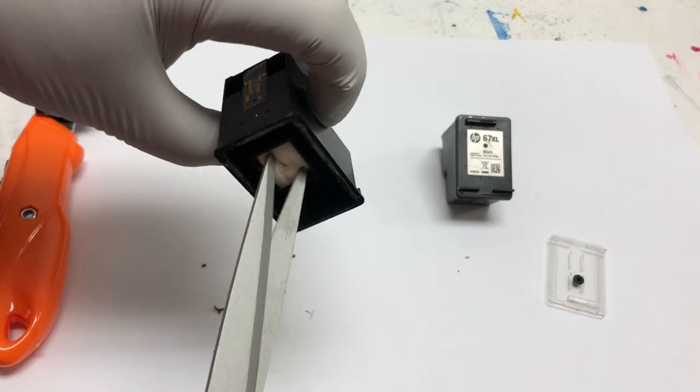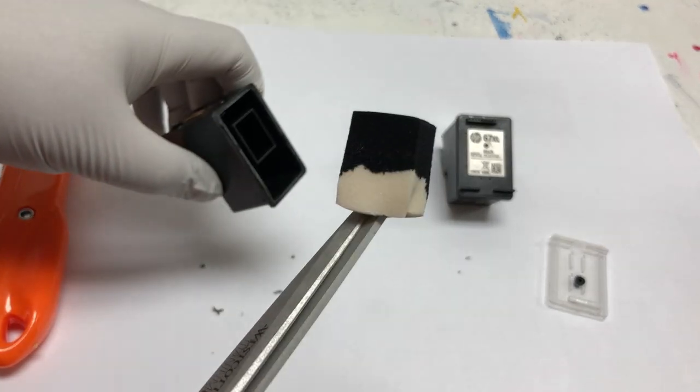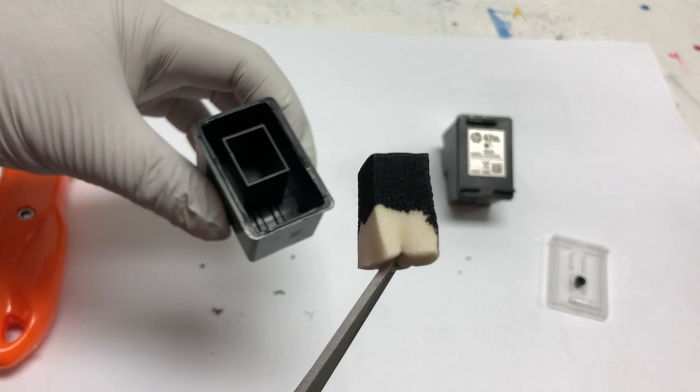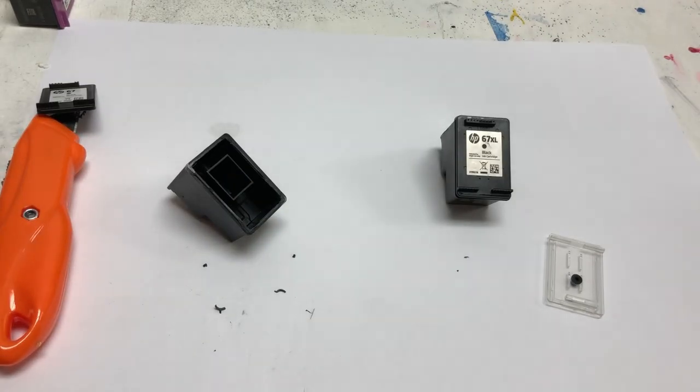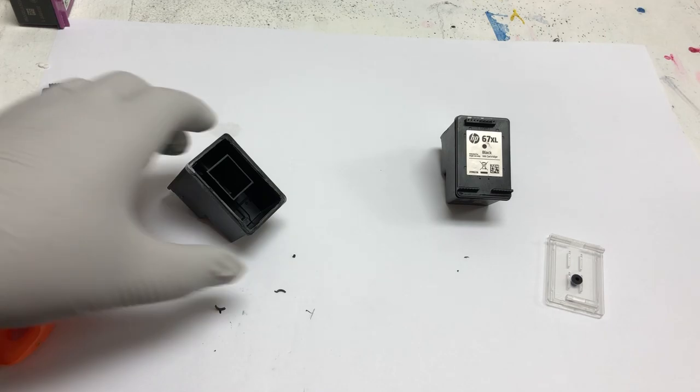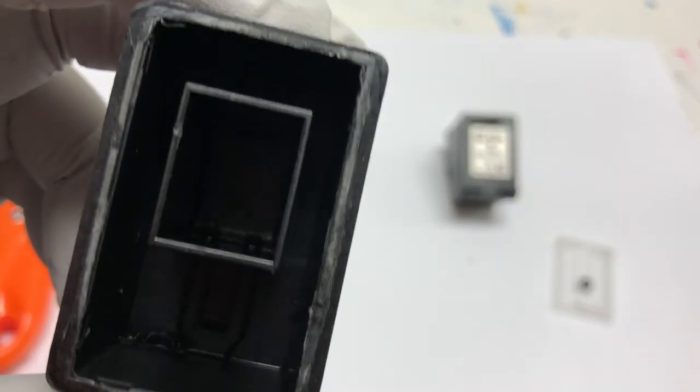This is a regular size 67. You can see HP didn't even bother to fill up the sponge. It only filled half full. You're paying $15 for that three drops of ink.